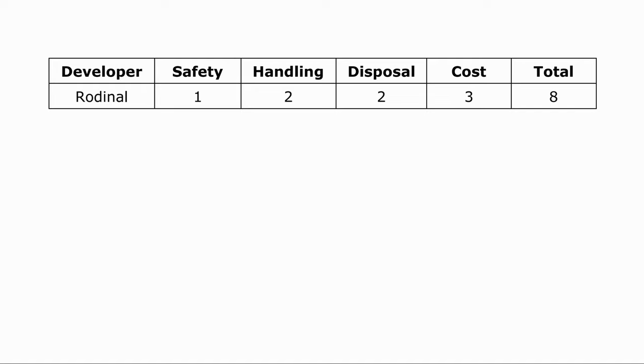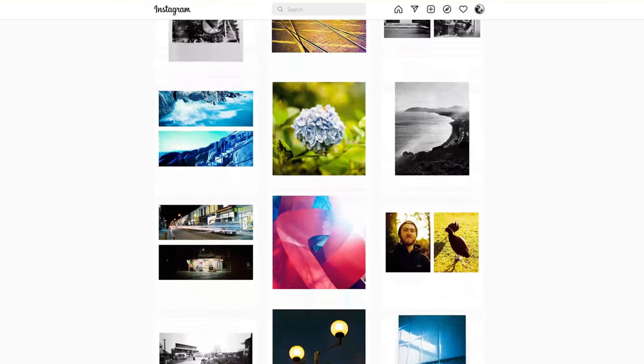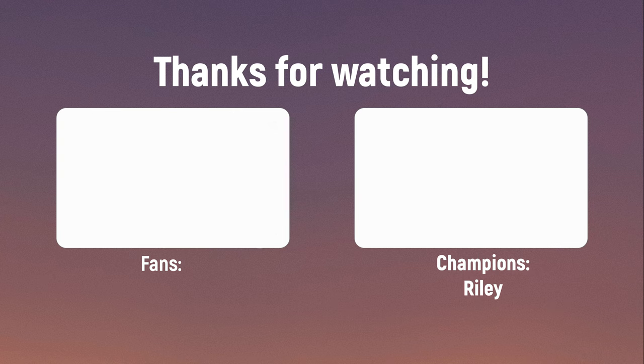So to tally up our scores: in terms of safety, I'm going to rate Rodinal 1 out of 3; handling, 2; disposal, 2; and cost, 3 out of 3. Rodinal performs very well, and I'm curious to see how other developers and film development chemicals perform using the same criteria as time goes on. So that's going to be it for this video — I hope you enjoyed it. I'll be back with another one of these videos in a few weeks. Stay safe, and bye bye for now. If you don't already, follow me on Instagram at shaka1277 for new pictures every single day, and please consider subscribing or donating to my Patreon where the tiers start at just €1 per month.